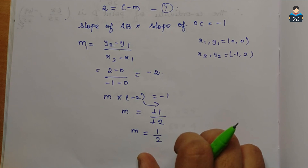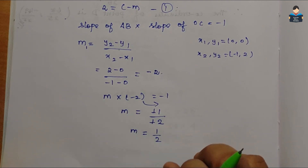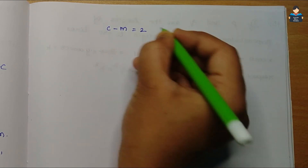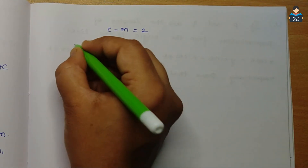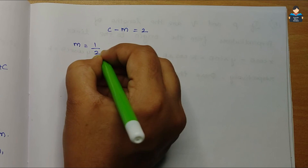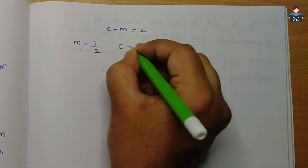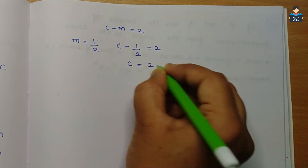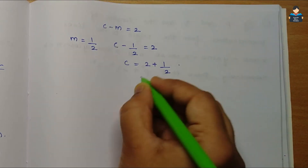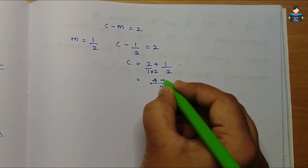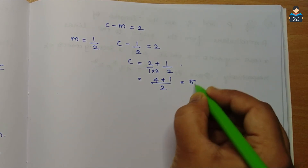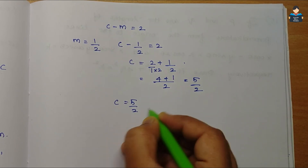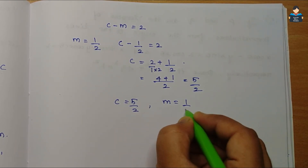Substituting m = 1/2 into Equation 1 (c - m = 2): c - 1/2 = 2, so c = 2 + 1/2 = (4 + 1)/2 = 5/2. Therefore m = 1/2 and c = 5/2.